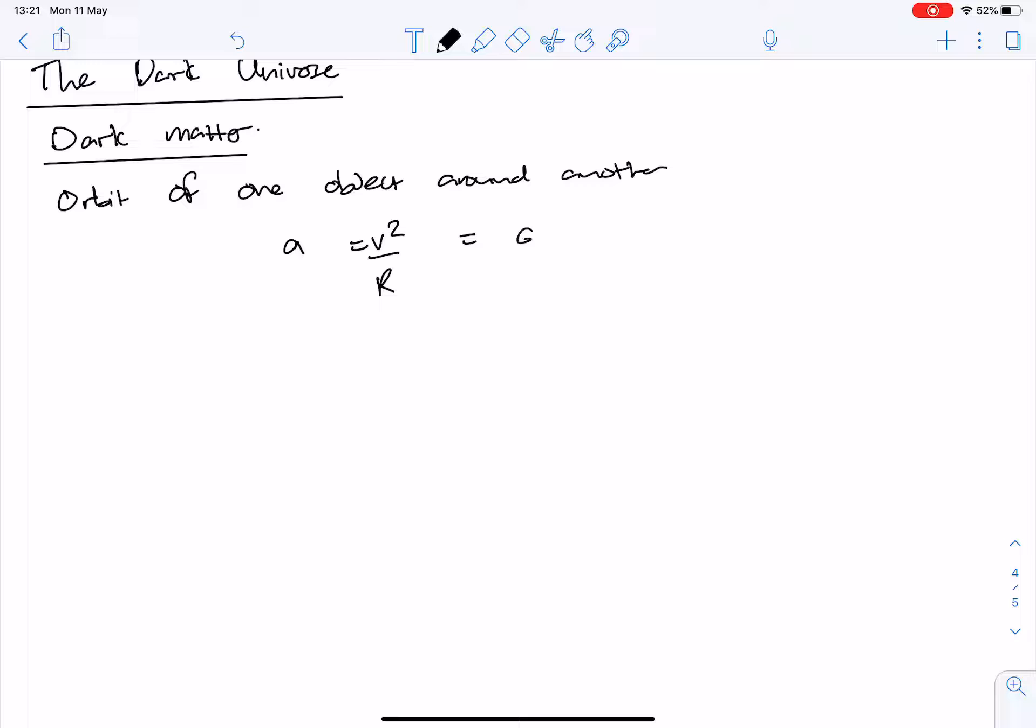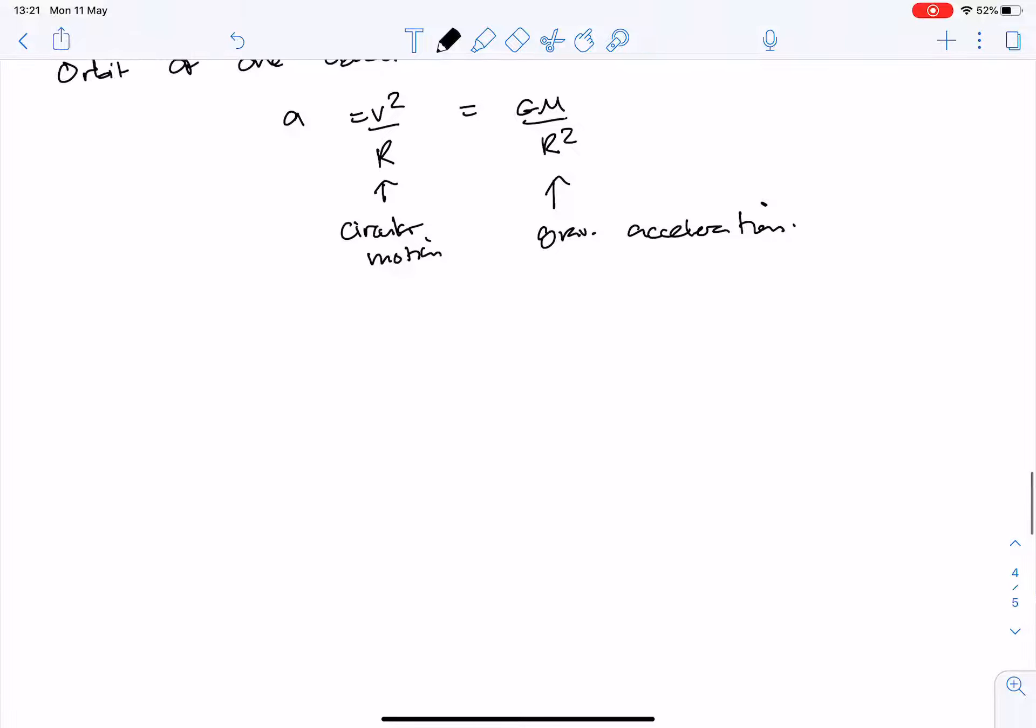then I have the acceleration is just v squared over r, and that's equal to GM over r squared. That's just circular motion. And you just equate that to the gravitational acceleration. And that tells me that v is equal to the square root of GM over r.